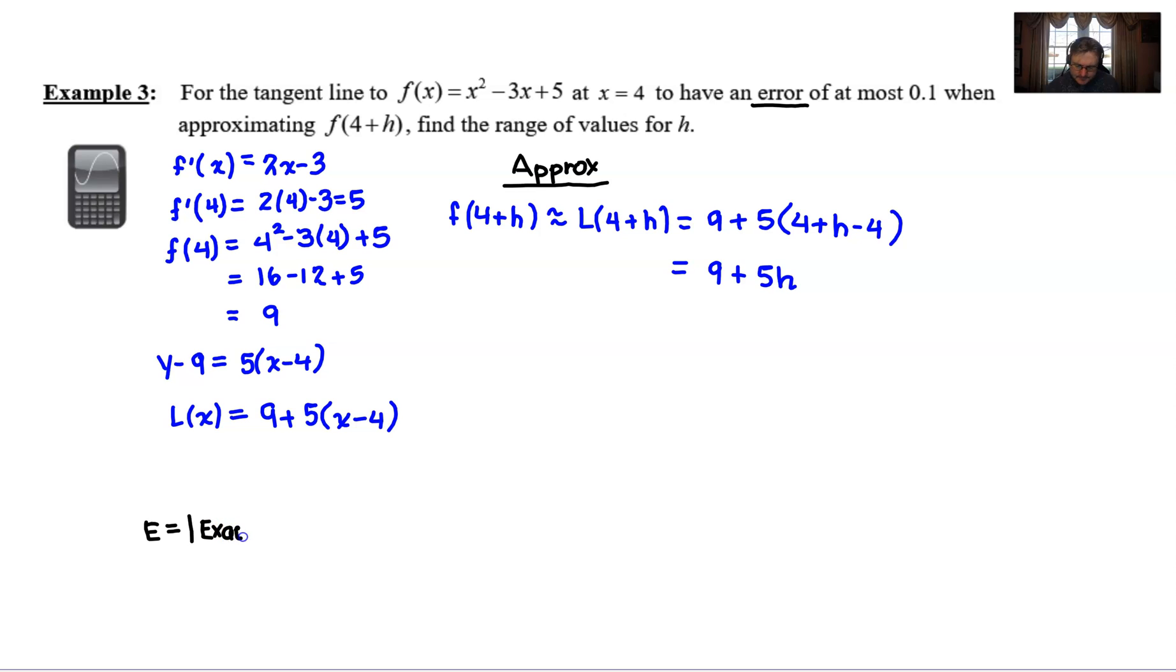The reason why I switched it is because I think that this is the way that I presented it in the last video, so I wanted to be consistent. Another word for exact might be actual value. Another word for approximate might be estimated. So you need to look for words like that that are synonyms.